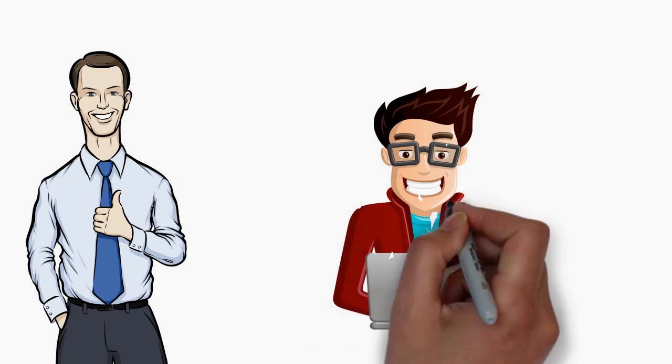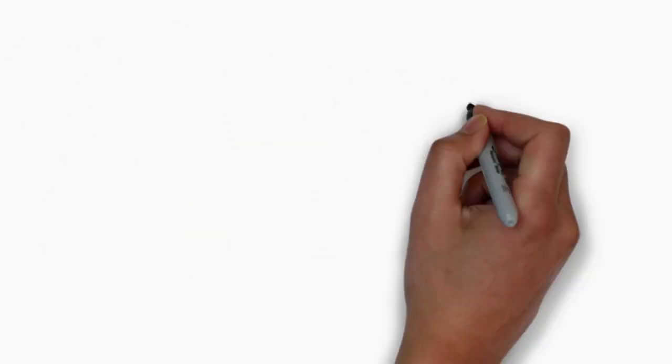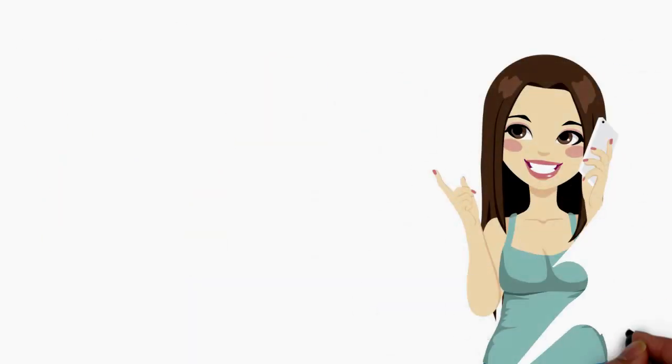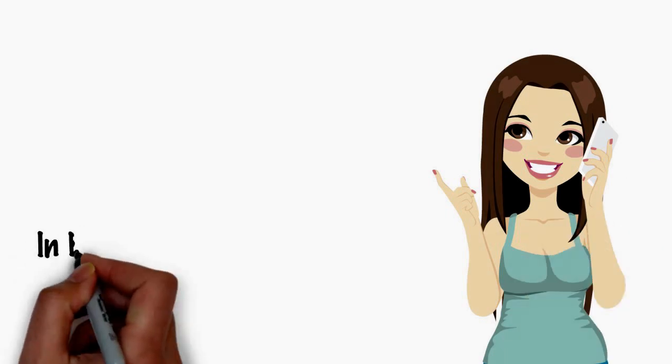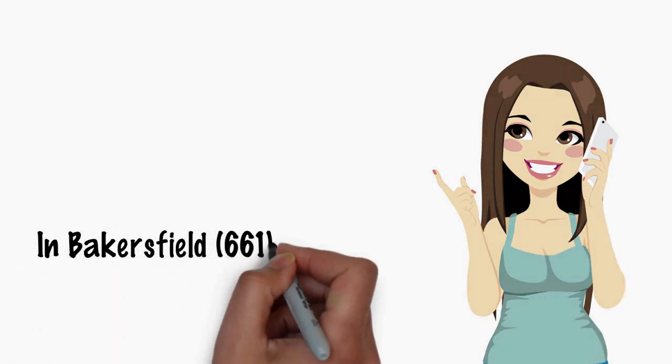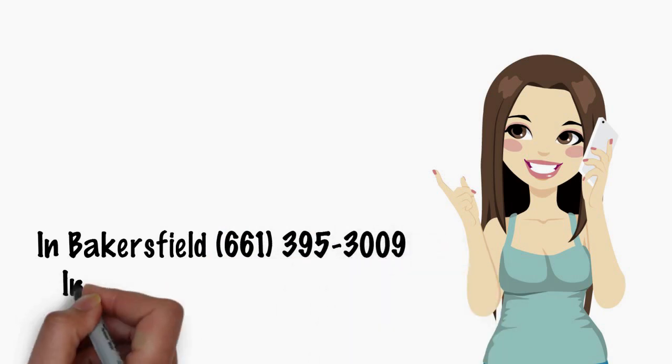To learn more, check out our latest post. Discover the Vanguard cleaning system's difference. Give us a call today in Bakersfield, 661-395-3009, or in Fresno, 559-473-1790.